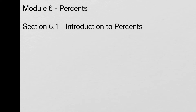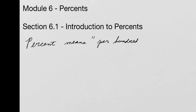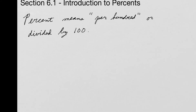Let me begin by defining what percent means. Percent really just means per hundred. The other way to think about that is it means divide by a hundred. So for instance, 45 percent really means 45 divided by 100. It's that particular ratio — that fraction. It's always per hundred.